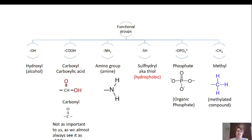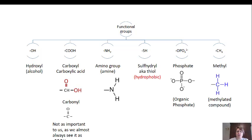Some more chemistry to lay the foundation before we get to our macromolecules: the six major functional groups we want to focus on for biochemistry. The first is a hydroxyl group — oxygen and a hydrogen bonded to the end of a molecule. These are alcohols. The next is a carboxyl group, also called a carboxylic acid group. It is a COOH, where the oxygen is double bonded to the carbon.